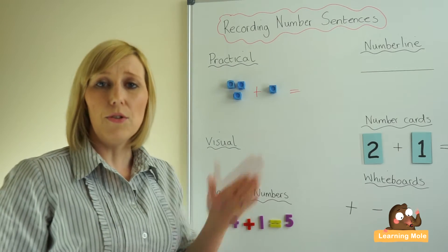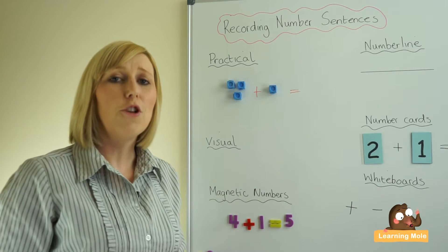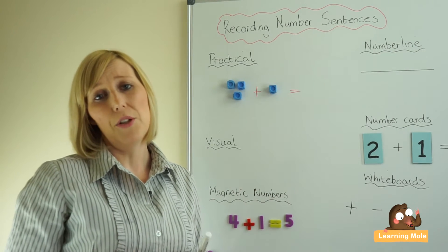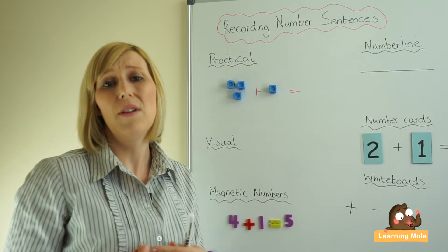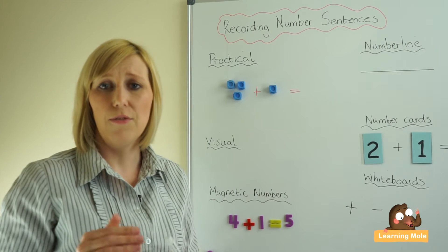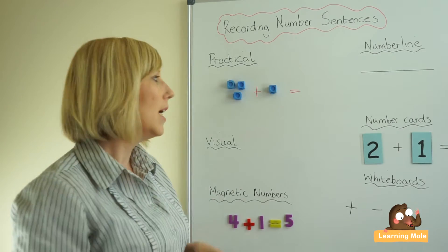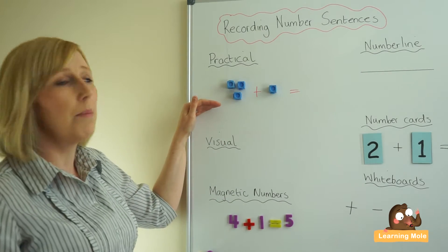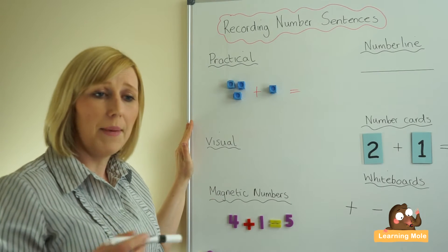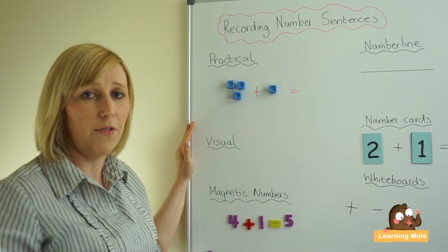Once you're happy with the understanding of the symbols, we want to go through all the processes and the steps. We have talked about some of these before, so it's a really good opportunity to revisit those before you actually start getting your child to formally write down what they're thinking. I would really start with the practical.